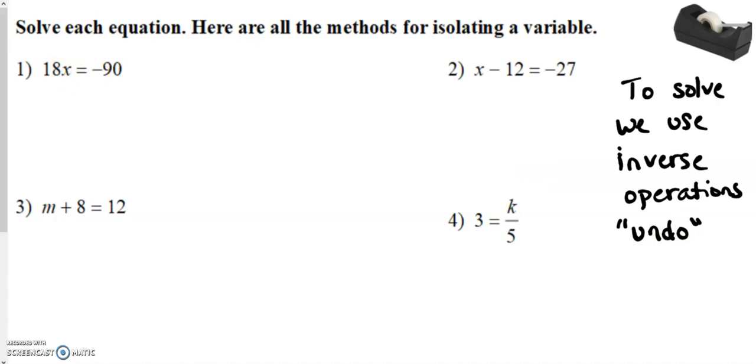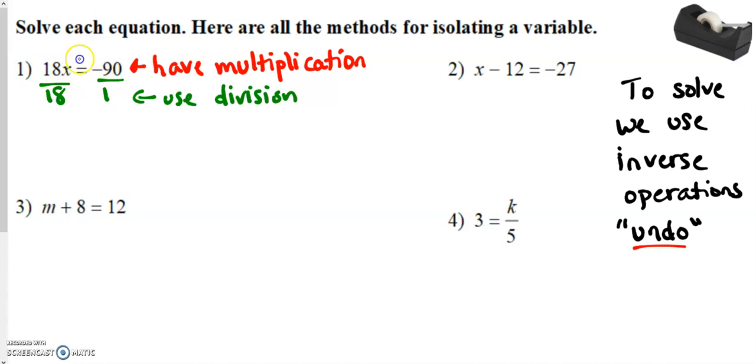And what that means is they undo whatever operation you have in the problem. So, if you look in this first example problem, we have 18 times X. That means we have multiplication. Okay. How do we undo multiplication? We use division. Okay. So, what we are going to do is we are going to divide both sides of our equation by 18. Okay. Because whatever you do to one side in order to balance the equation out, you have to do that to the other side. So, we are going to divide both sides, left side, right side by 18. And we get that X is equal to negative 5.